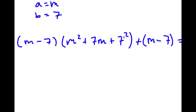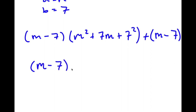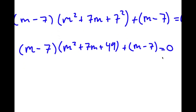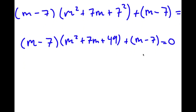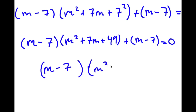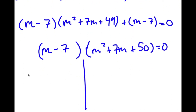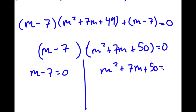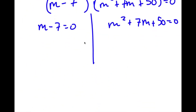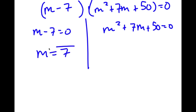Since 7 squared is 49, I have (m minus 7)(m squared plus 7m plus 49) plus (m minus 7) equals 0. Factoring out (m minus 7), I get (m minus 7)(m squared plus 7m plus 49 plus 1) equals 0, where 49 plus 1 equals 50. This gives two equations: m minus 7 equals 0, and m squared plus 7m plus 50 equals 0. From the first equation, m equals 7.